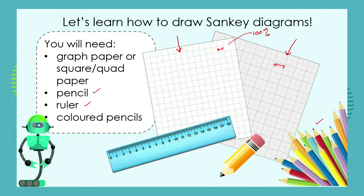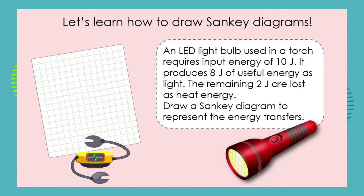It's quite nice to have colored pencils in order to distinguish between the input energy and the output energies — it just makes your diagram a lot clearer. So we're going to draw a Sankey diagram for a torch. An LED light bulb is supposed to be quite energy efficient — we're going to see if it is. It's used in a torch and requires a small energy input of only 10 joules.